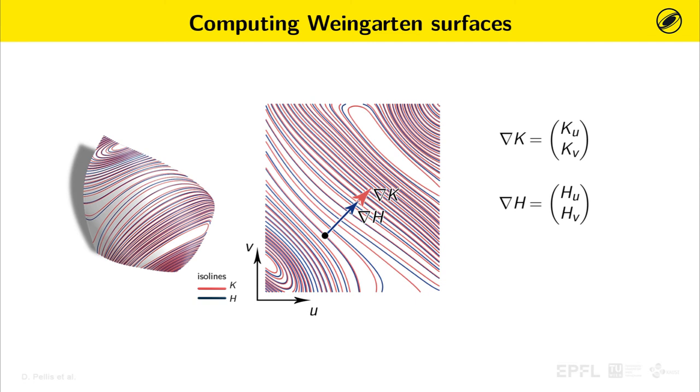Therefore, if the two isolines are parallel, also these two gradients will be parallel at each point. We can then define Weingarten surfaces as surfaces where the determinant of the gradients of Gaussian and mean curvature vanishes at each point.